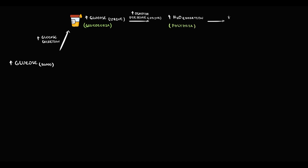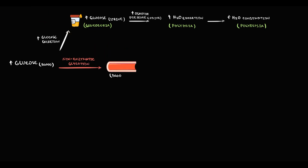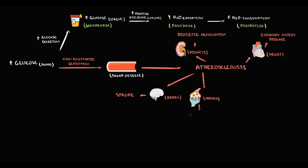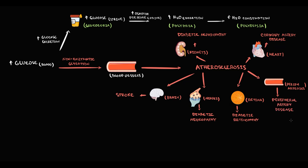With increasing excretion of water, the organism needs to increase water consumption, so patients will drink more — a state called polydipsia. The major danger of elevated blood glucose is its ability to cause non-enzymatic glycation of proteins, including proteins on blood vessels, which eventually causes atherosclerosis. Atherosclerosis in the kidneys causes diabetic nephropathy; in the heart, coronary artery disease; in the brain, increased stroke risk; in the nerves, diabetic neuropathy; in the retina, diabetic retinopathy; and in peripheral blood vessels, peripheral artery disease. This atherosclerosis-related injury is considered the major complication of diabetes.